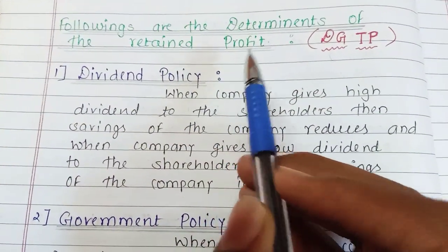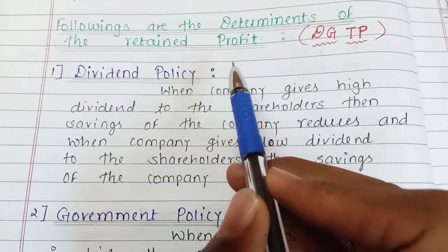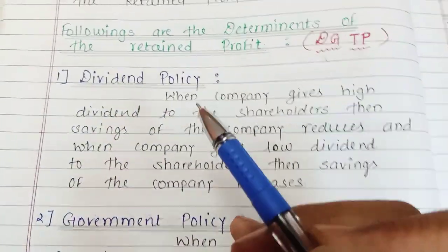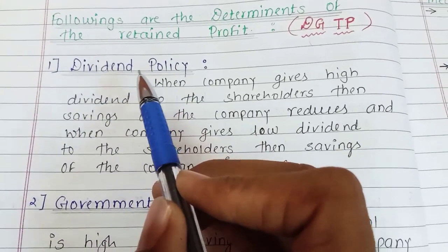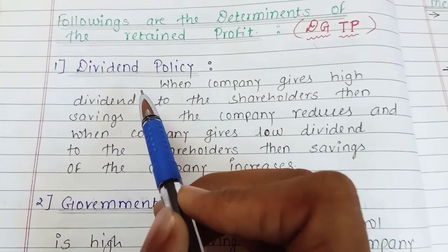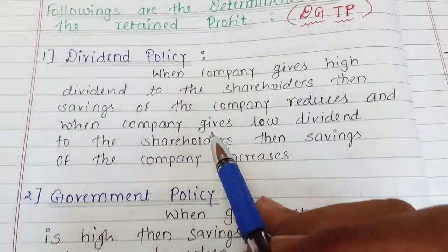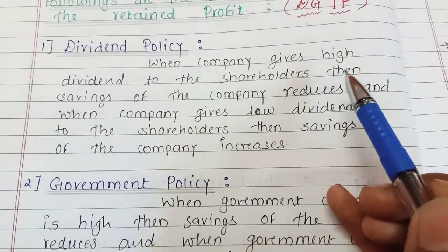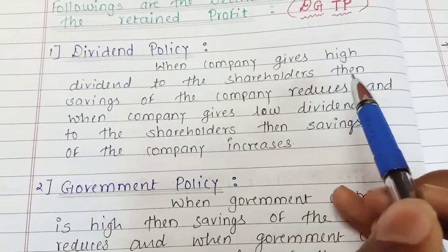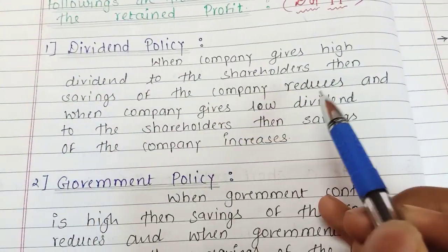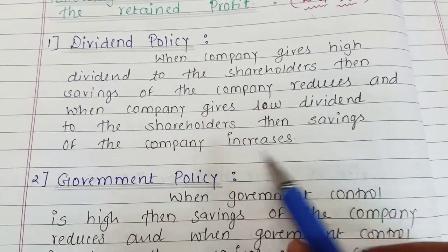Now let us understand the determinants of retained profit — what factors determine the retained profit of a company. First is the dividend policy. If the company gives high dividend to shareholders, then the saving of the company reduces. And when the company gives low dividend to shareholders, then the saving of the company increases.